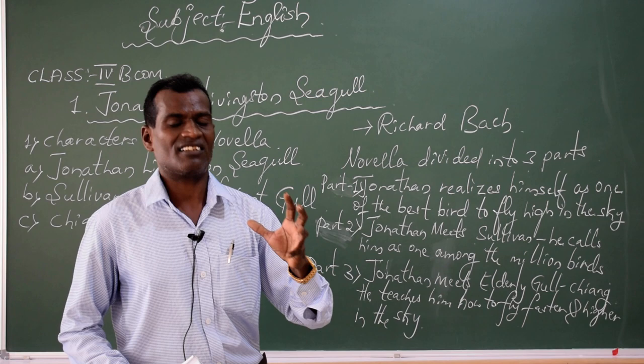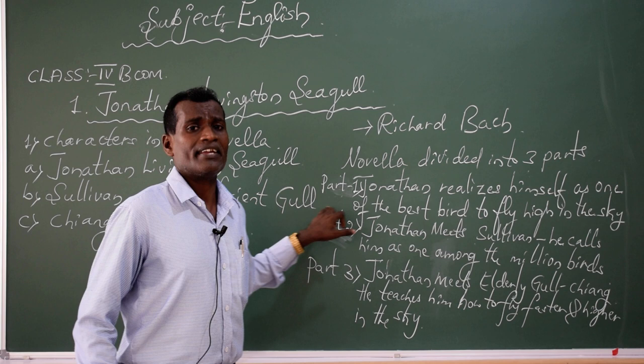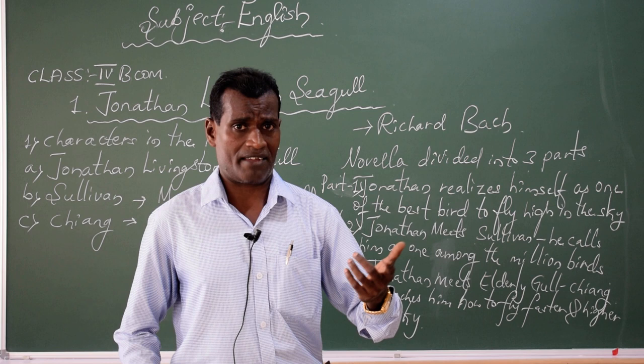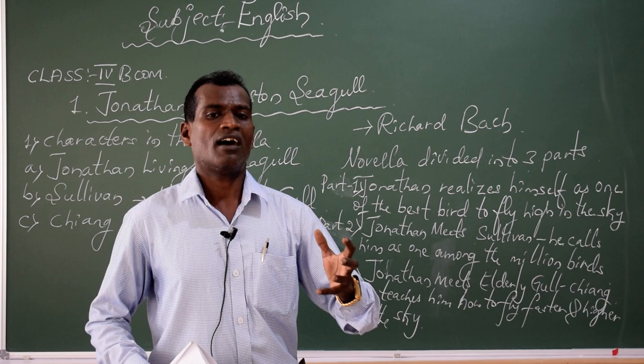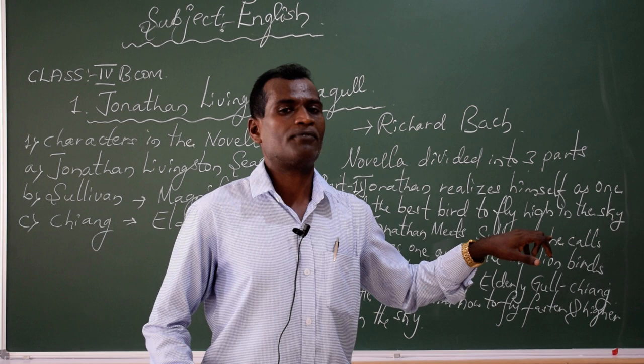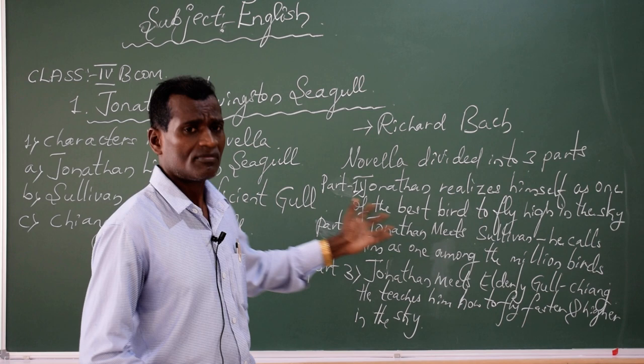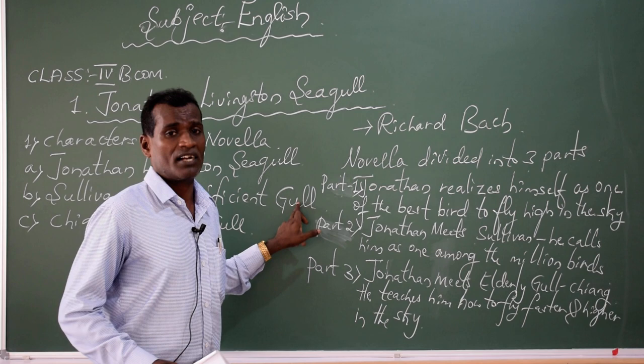From this novella we come to know that anyone can achieve anything in his life, because unless and until one puts in labor and undergoes a lot of work with dedication, determination, and practice — definitely the doors of success will be open for everyone. Practice makes man perfect. Jonathan Sullivan is going to realize that he is going to achieve something in his life.